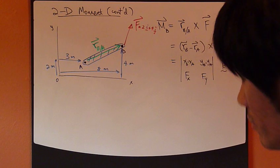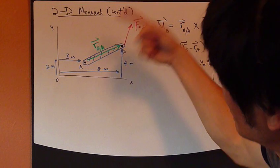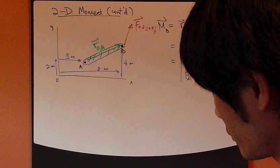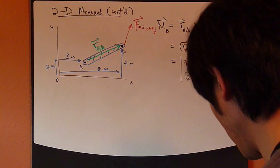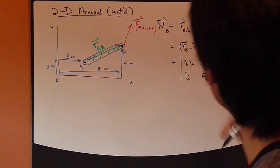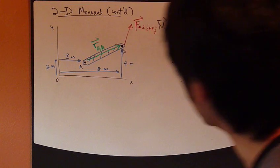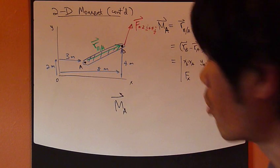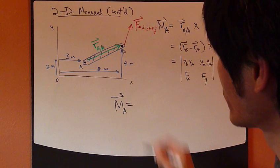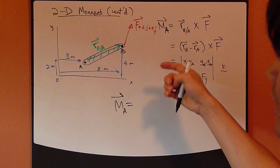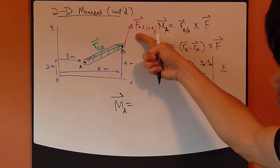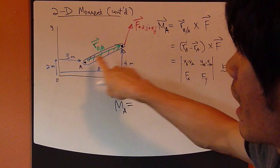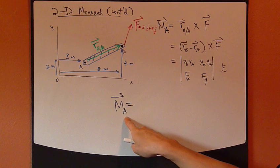So moment of this force about point A, which is the tendency of this force to want to rotate this rigid body about point A, about this point where you take moment.